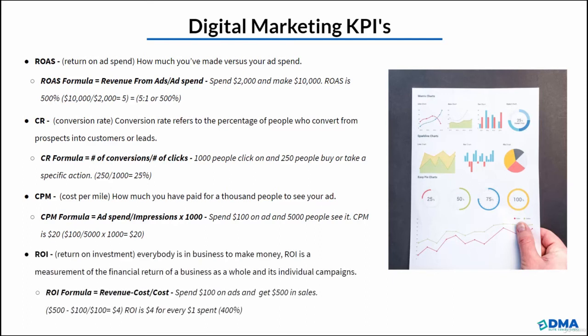Finally, we have ROI — return on investment. This is the most important KPI because all the others, including conversion rate, CPM, CPC, and CPA, feed into it. We're measuring the total amount of return versus our initial investment. The formula is total revenue minus cost, divided by cost. For example, $500 in sales minus $100 ad spend, divided by $100, equals 4 — so our ROI is 400%, or $4 for every $1 spent.